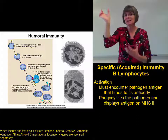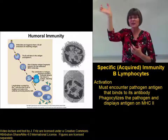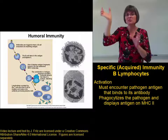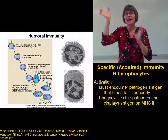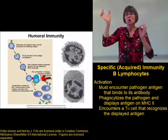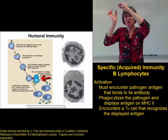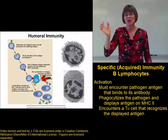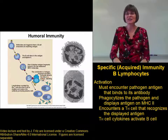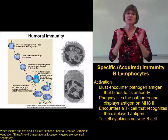This B cell is still not active. The B cell is showing its pathogen antigen, but it has to wander about until it bumps into a helper T cell. It needs to find a helper T cell with the receptor that matches its pathogen antigen. When it finds that, they bind, and the helper T cell releases cytokines that activate the B cell.